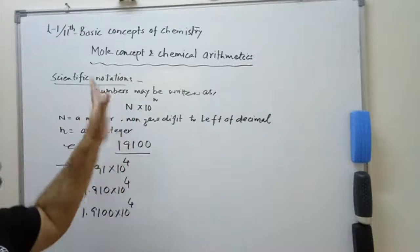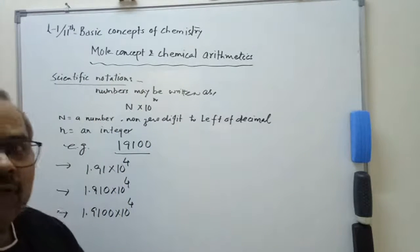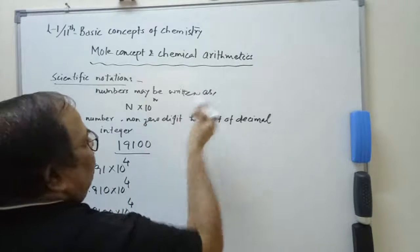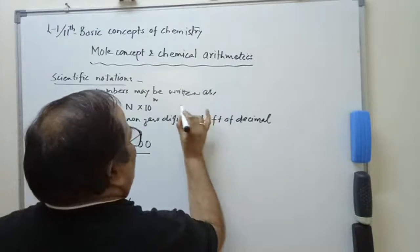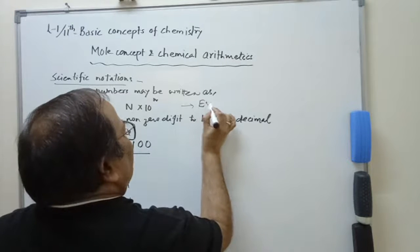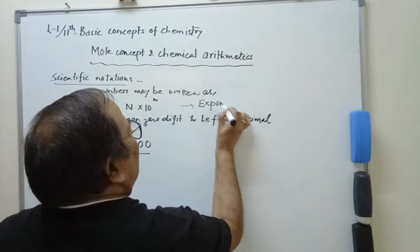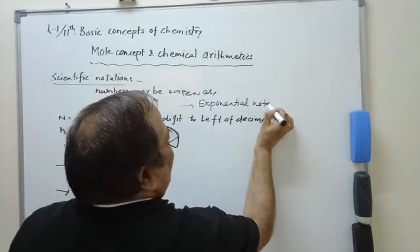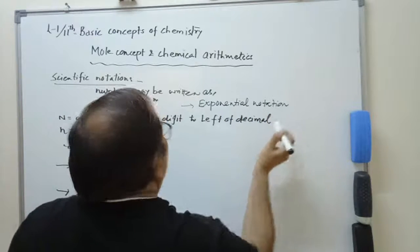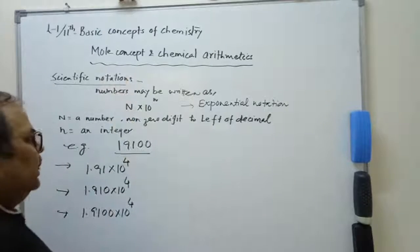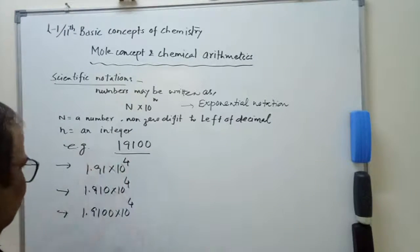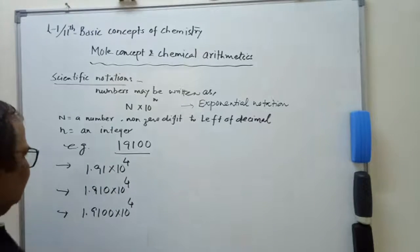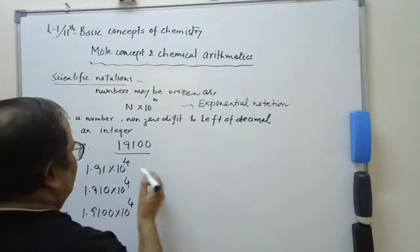To express a number in the form of exponential notation — this is known as exponential notation, and in broad sense it is termed as scientific notation. Now we can determine the significant figures: what is the significant figure of this number?